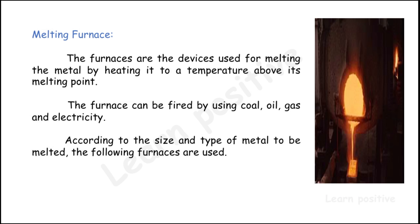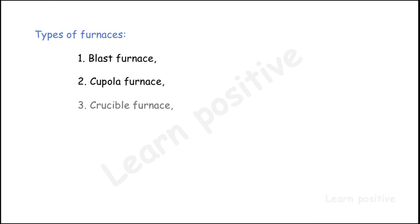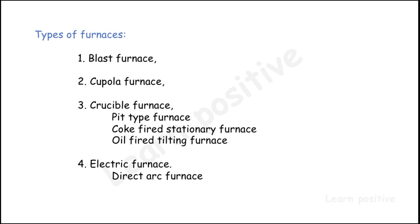The following types of furnaces are used: blast furnace, cupola furnace, and crucible furnace. In crucible furnace, there are three types: pit type furnace, coke-fired stationary furnace, and oil-fired tilting furnace. There is also the electric furnace, which has three types: direct arc furnace, indirect arc furnace, and induction furnace.